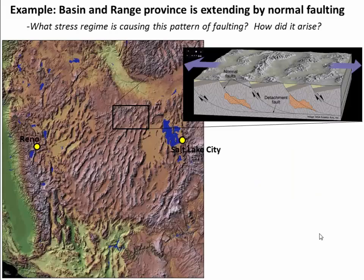I want to motivate this with an example from the Basin and Range Province in Nevada. The Basin and Range is an area located between Reno, Nevada and Salt Lake City, Utah — essentially between the Sierra Nevada mountains and the Rockies. All these north-south ridge lines are actually large mountain ranges separated by deep basins filled with sediment. The origin of these basins and ranges is a series of extensional normal faults. Each of these mountain ranges is flanked by an extensional normal fault that's dropped the basin downward and allowed the mountain range to pop up on the hanging wall.